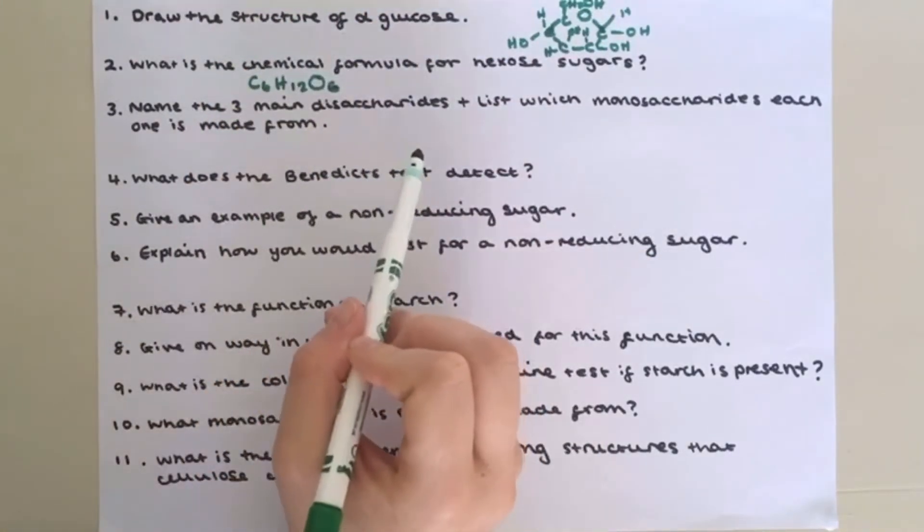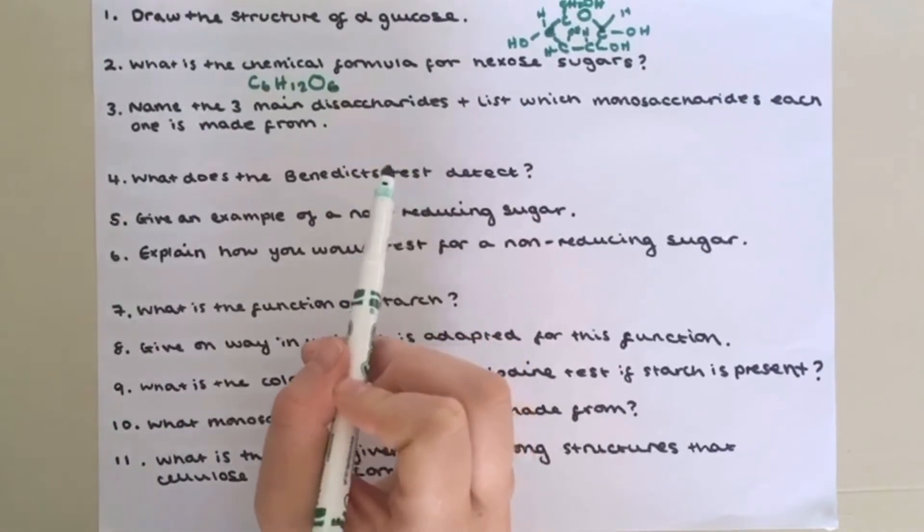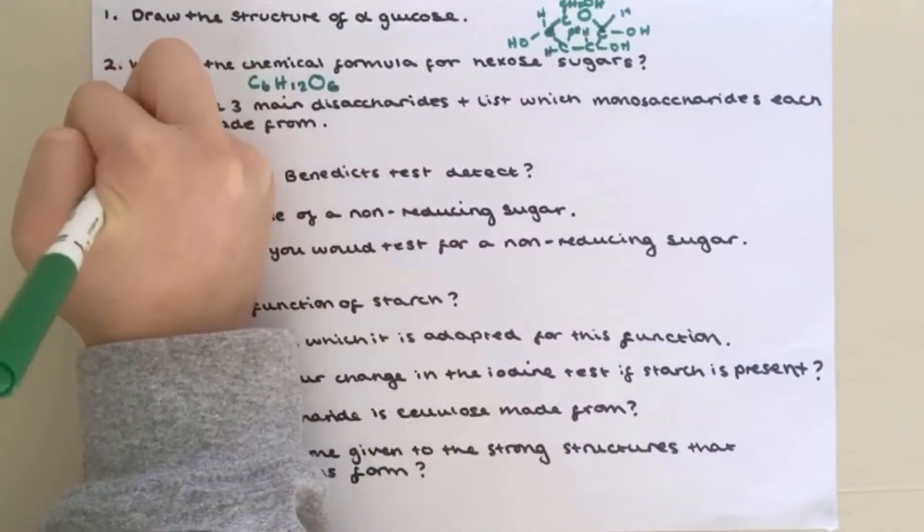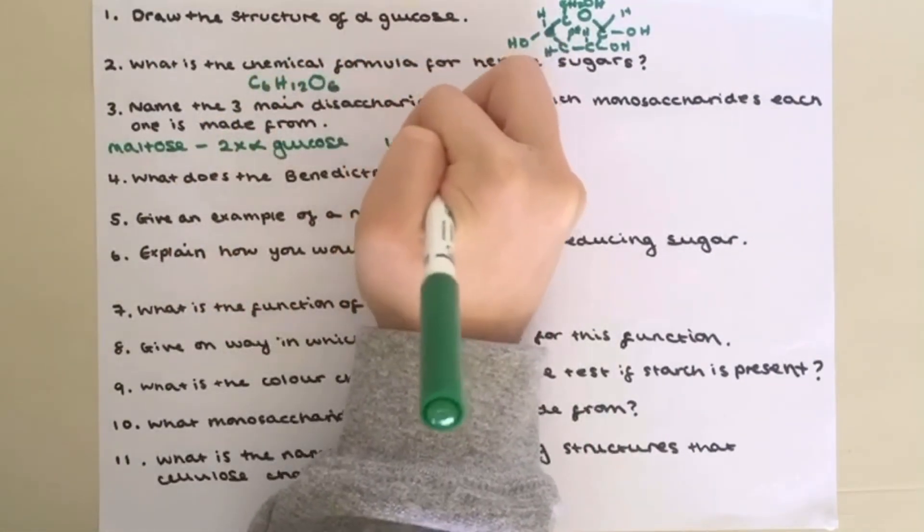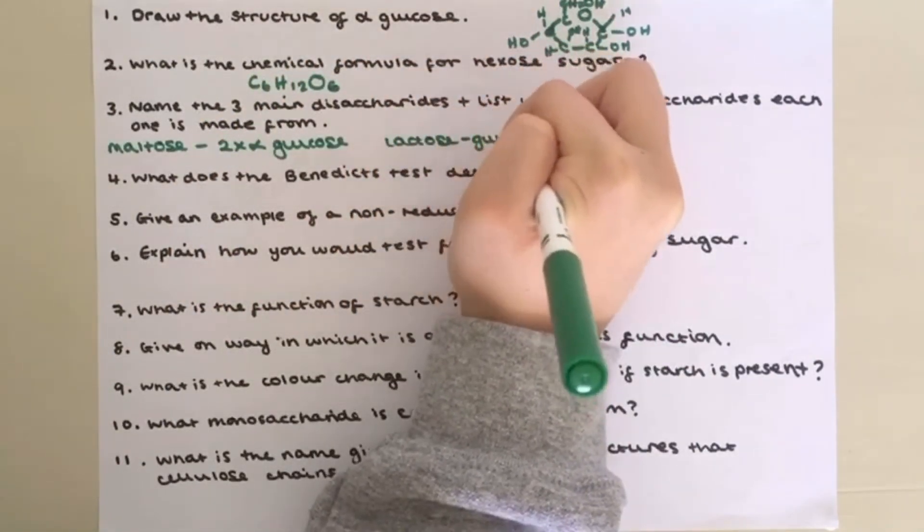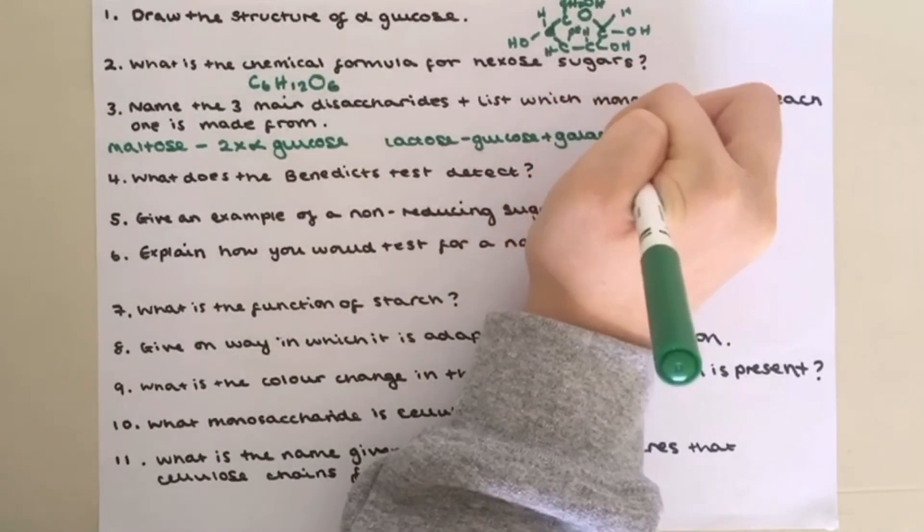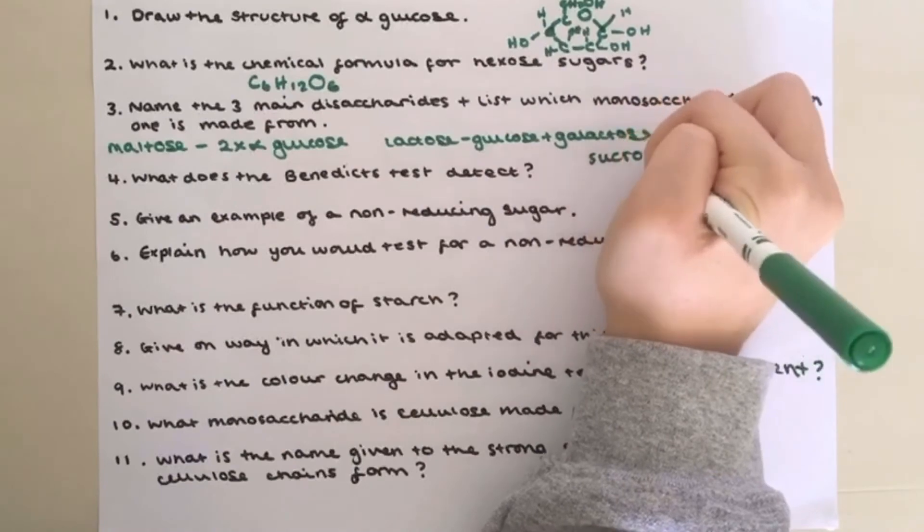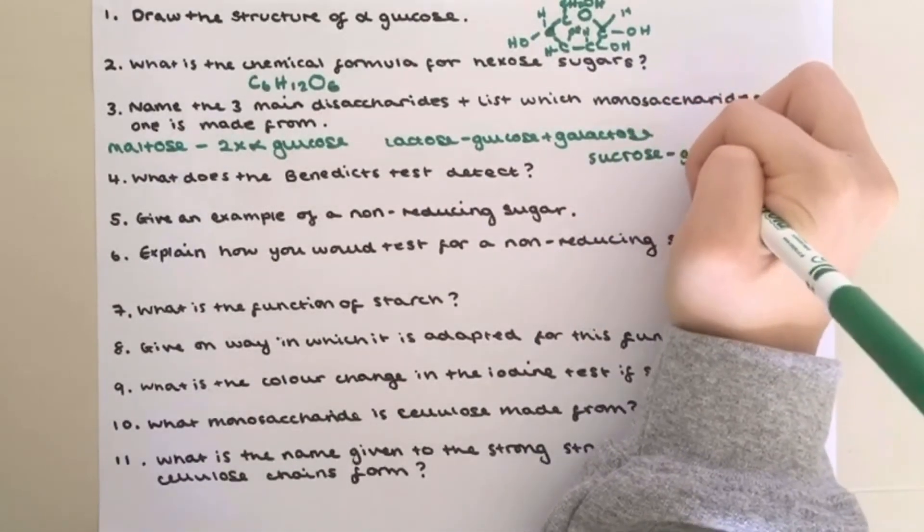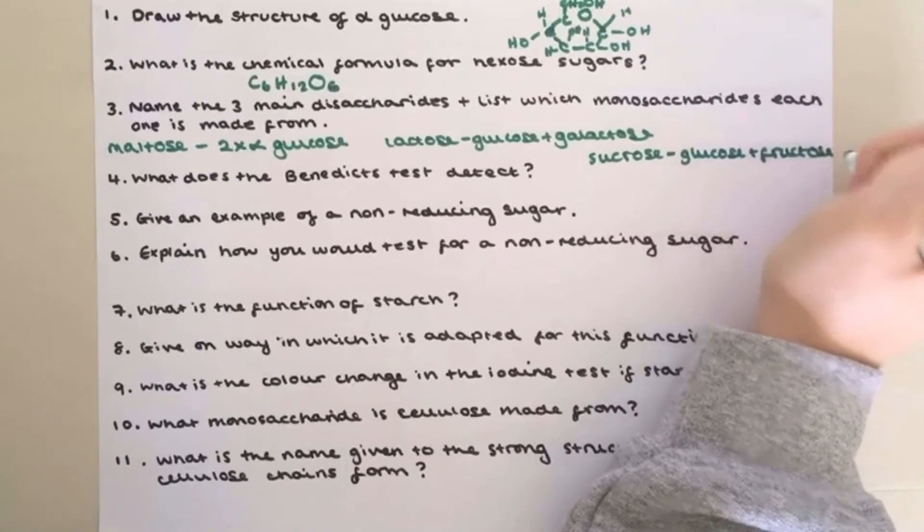Name the three main disaccharides and list which monosaccharides each one is made from. So firstly you have maltose which is made from two molecules of alpha glucose. Then we have lactose which is made from glucose and galactose. And then you have sucrose which is made from fructose and glucose. Remember all three have glucose in them.